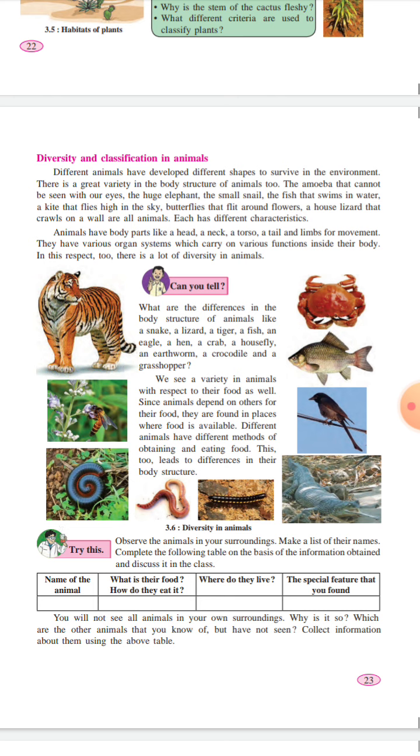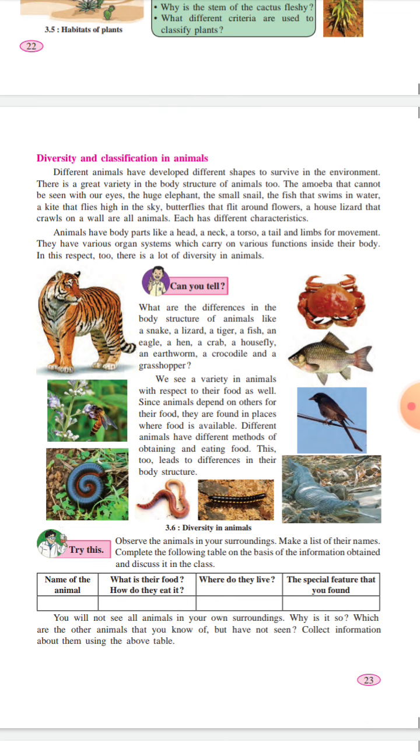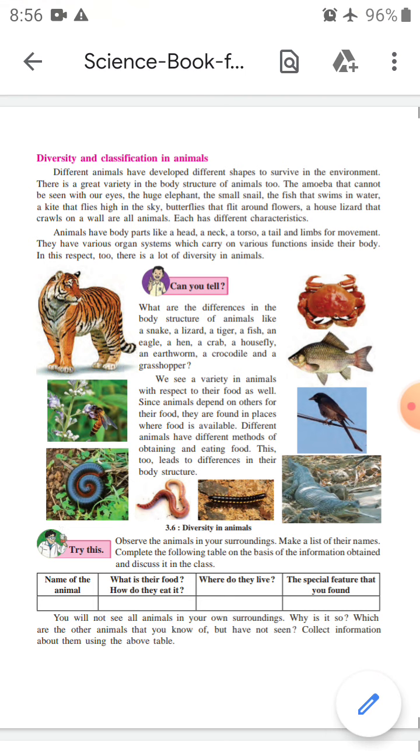See your textbook page number 23, Diversity and Classification in Animals. Different animals have developed different shapes to survive in the environment. There is great variety in the body structure of animals too - the amoeba that cannot be seen with our eyes, the huge elephant, the small snail, the fish that swims in water, a kite that flies in the sky and butterflies that flit around flowers, a house lizard that crawls on a wall - all are animals.